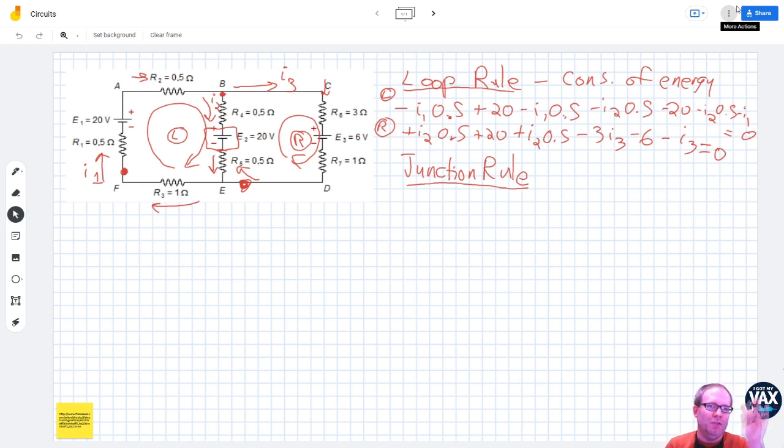Then we need to do the junction rule. The idea of the junction rule is that this is conservation of charge. You can't just have charge appearing out of nowhere, meaning you can't have current appearing out of nowhere. So for this rule, if we look at this junction that they've already labeled B for us, this means that I1, when it splits apart into I2 and I3, I1 has to equal I2 plus I3.